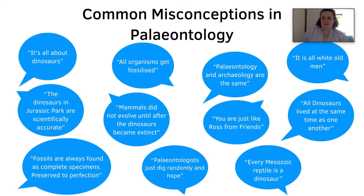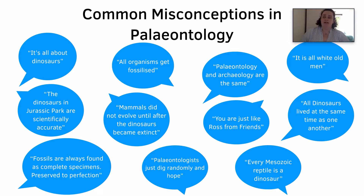The dinosaurs in Jurassic Park are scientifically accurate. For most of the park, yes. However, the main ones that aren't accurate are Velociraptor, which would have been in reality the size of a turkey. What they've done is, instead of using the Velociraptor to make it look more scary, they used its relative called Deinonychus, which is a lot larger.